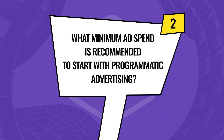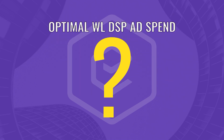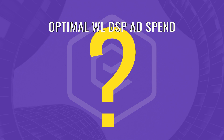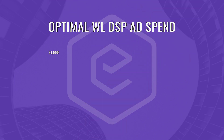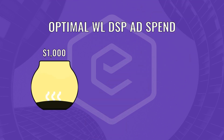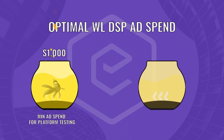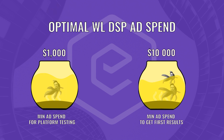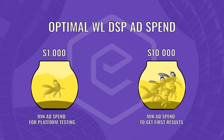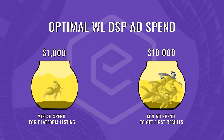What minimum ad spend is recommended to start with programmatic advertising? It depends on what you want to achieve. If you want to test how the platform works, you can start off with $1,000 monthly ad spend. But if you want to get serious results and valuable conversions, the minimum monthly spend you may expect is up to $10,000 — the optimal sum to run the right number of ads and understand what works best.